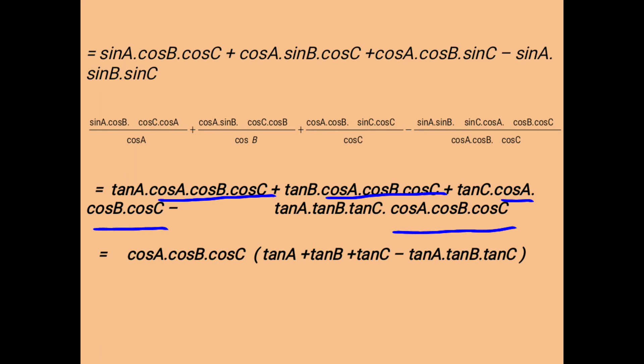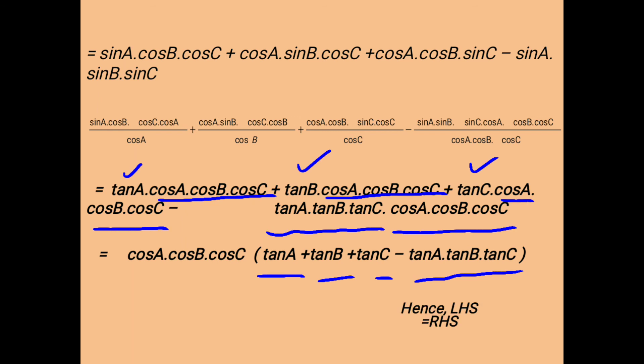The bracket then contains: tanA as the first term, tanB as the second, tanC as the third, and minus tanA·tanB·tanC as the final term. So this is the way to prove this identity. I hope you enjoyed this video, liked the process, and are crystal clear with this type of equation. All the best — see you soon.